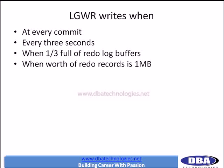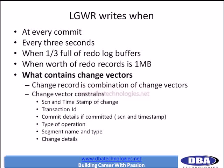That is the mechanism followed for all memory structures writing to physical files. A change vector contains the details about the change: the SCN number, the transaction ID, commit details if committed, the type of operation (insert, update, or delete), which segment it belongs to (table or index), and all the change details. The entire change information is part of the change vector so that in case of recovery, this information can be used to rebuild all transactions. These are saved into redo log files.